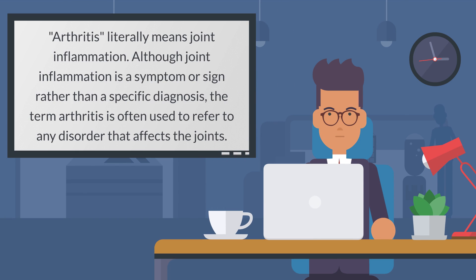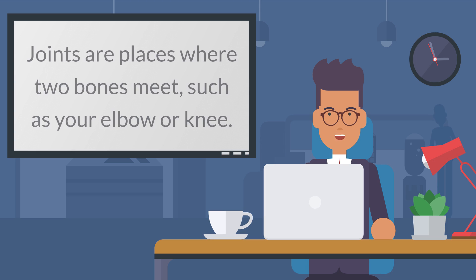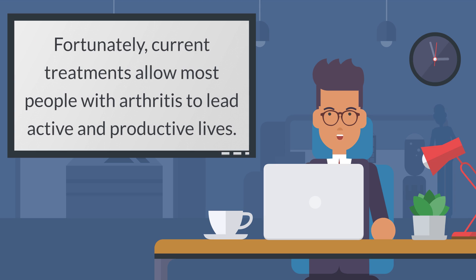Arthritis literally means joint inflammation. Although joint inflammation is a symptom or sign rather than a specific diagnosis, the term arthritis is often used to refer to any disorder that affects the joints. Joints are places where two bones meet, such as your elbow or knee. Fortunately, current treatments allow most people with arthritis to lead active and productive lives.